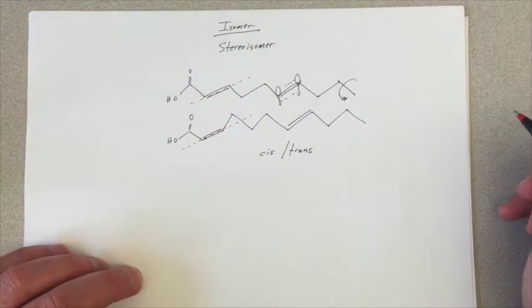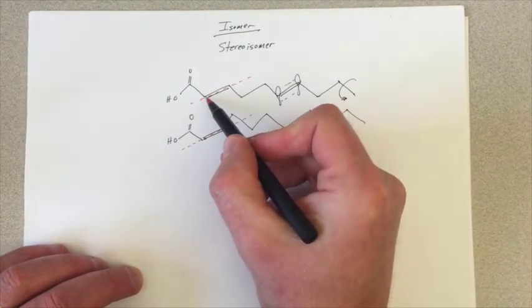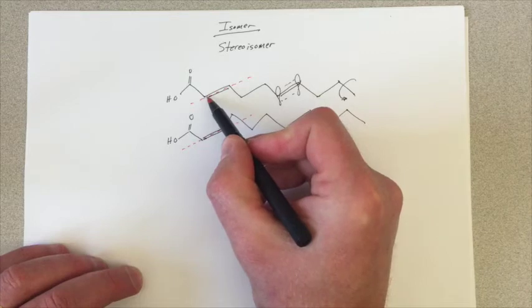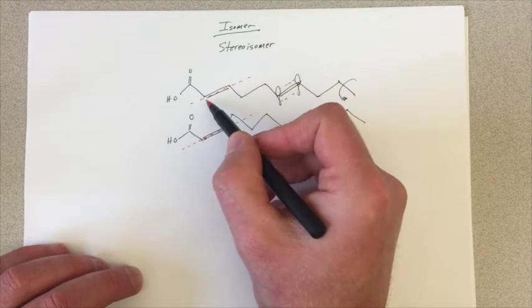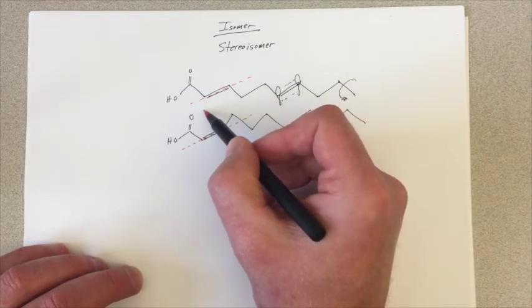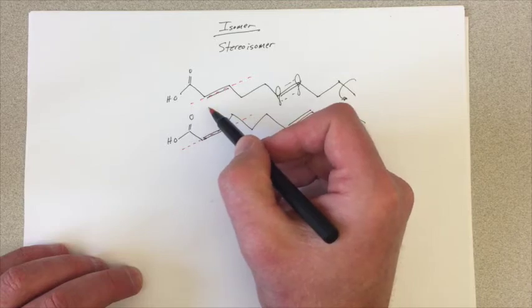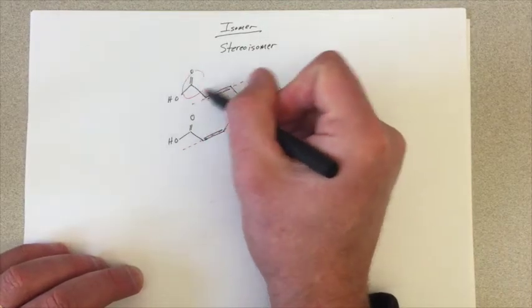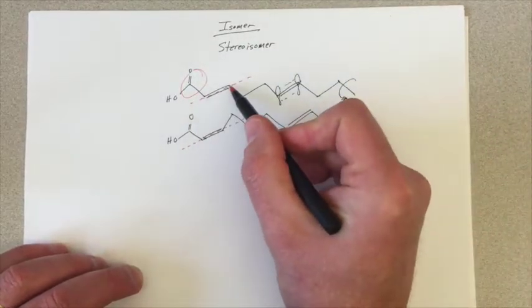And then I'll circle the more interesting thing that's present on each carbon. So here, here's a carbon, this part of the double bond. This group, carboxylic acid, is much more interesting than the hydrogen, which is going down. I haven't written it because I don't need to in my skeletal structure. So that's more interesting on this carbon.